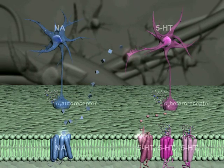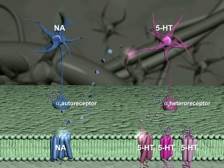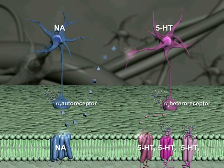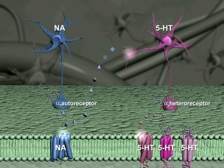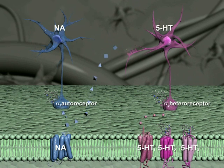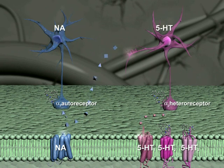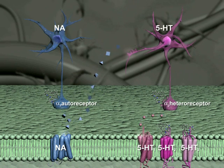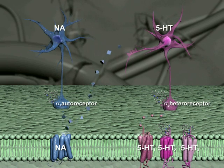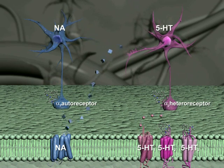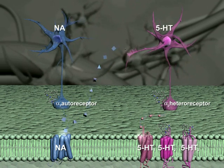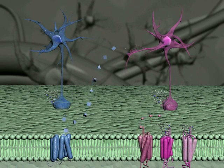Mirtazapine's mode of action: it is an antagonist of central alpha-2 auto and heteroreceptors, which causes an increase in both NA and serotonin release. Mirtazapine's effect on serotonin release is exerted solely via 5-HT1 receptors, and it specifically blocks 5-HT2 and 5-HT3 serotonergic receptors.